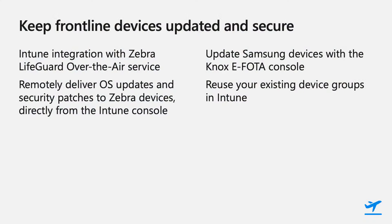Now, we know how important it is for you to keep your devices updated and secure, which is why we have recently partnered with Zebra to add integration with Zebra's Lifeguard over-the-air service, which lets you deliver updates and patches to Zebra devices directly from the Intune console. On Samsung devices, you can also perform firmware updates remotely using the Knox ePhoto console, which integrates with your existing Intune tenant. Let's take a look at what this looks like on Zebra devices.